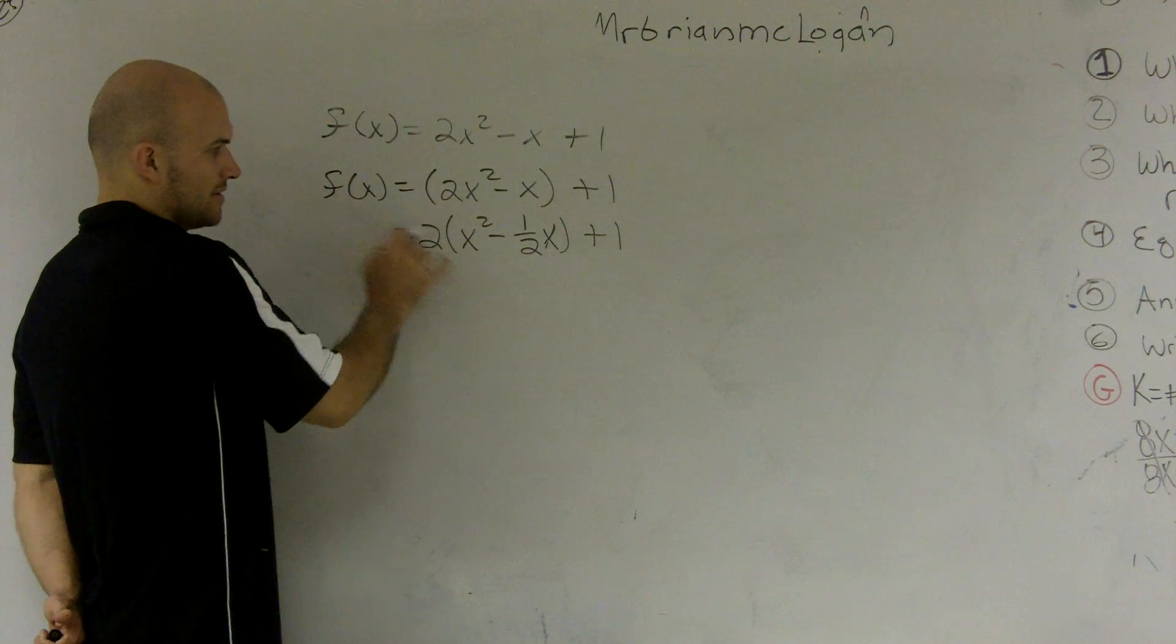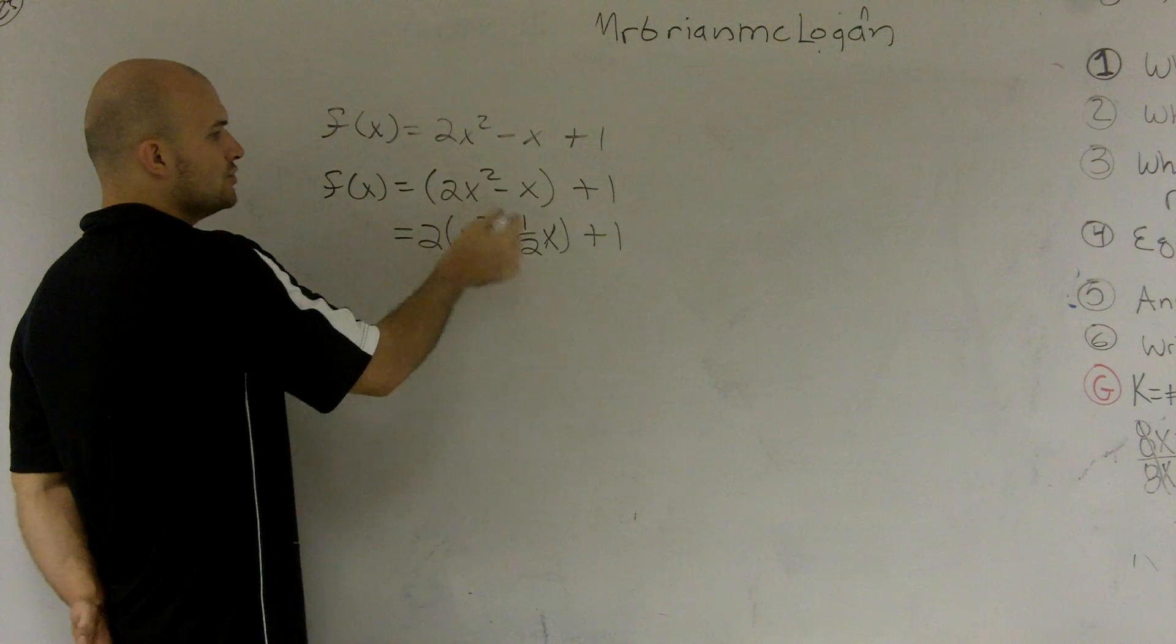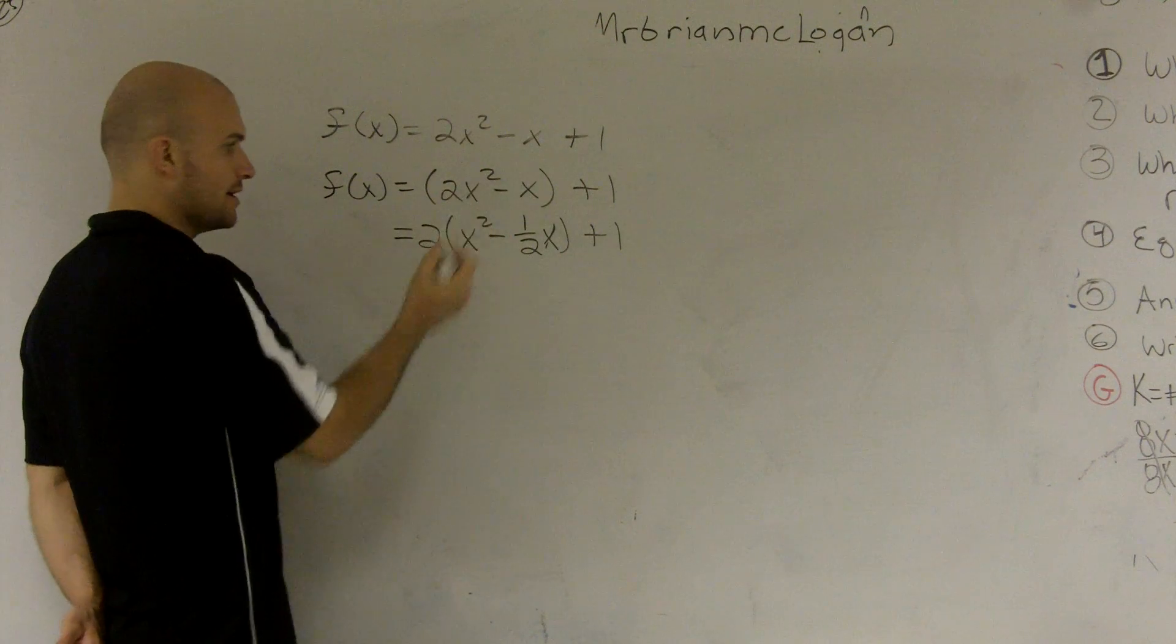It's going to be x squared minus 1 half x plus 1. Does that make sense? Because if you were to do distributed property back, 2 times x squared is 2x squared. 2 times negative 1 half will give you negative 1.